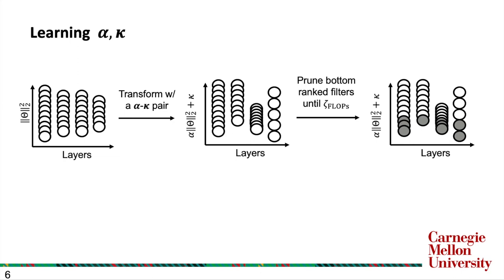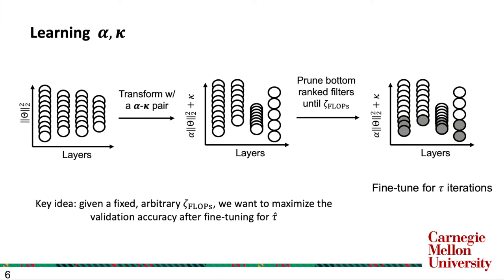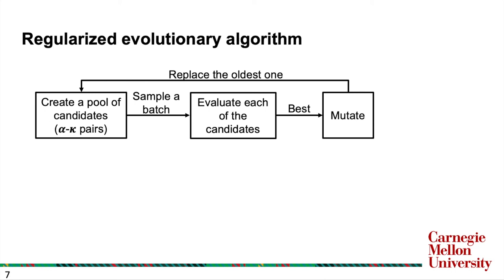The resulting network is then fine-tuned for tau iterations to produce a pruned network. The key idea is that, given a fixed arbitrary zeta-flops constraint, we want to maximize the validation accuracy after fine-tuning for tau iterations. Here, zeta-flops and tau are two hyperparameters that we have ablated in the paper. To optimize alpha and kappa this way, we can resort to zero-th order optimization techniques.